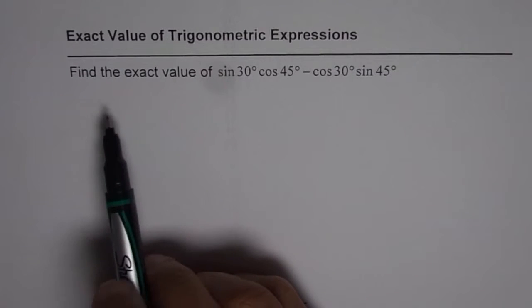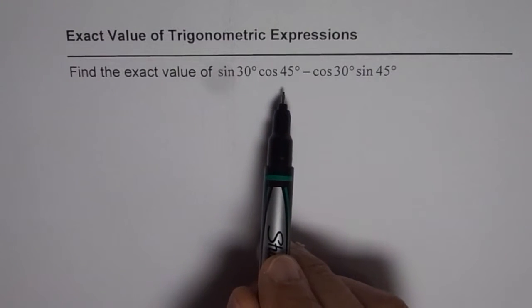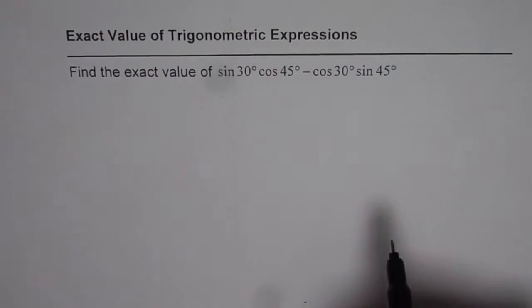I'm Anil Kumar and now let us find the exact values for the given trigonometric expression. The question is: find the exact value of sin 30° cos 45° minus cos 30° sin 45°.